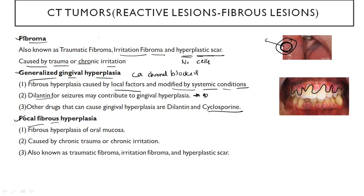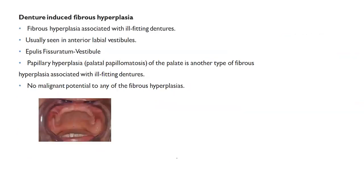Now coming to focal fibrous hyperplasia — this means it happens in a particular localized space. It is called fibrous hyperplasia of the oral mucosa. It can be caused due to chronic trauma or chronic irritation. It is also known as traumatic fibroma, irritation fibroma, and hyperplastic scar.